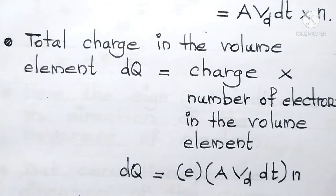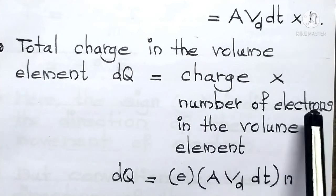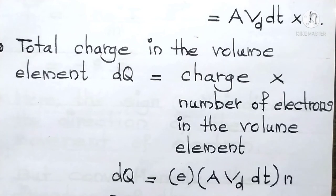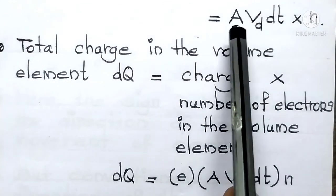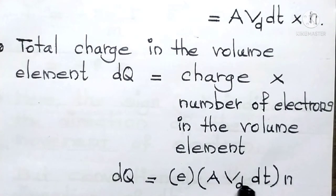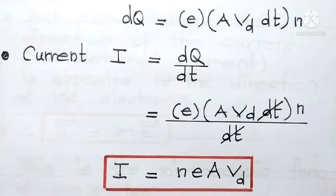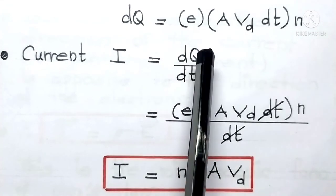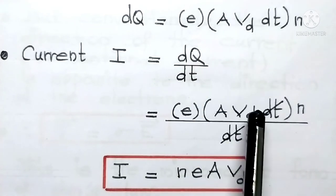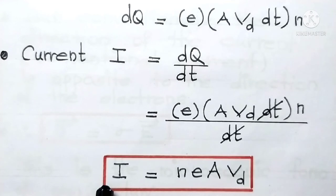The total charge in the volume element dq equals charge times the number of electrons in the volume element. So dq = e · A · Vd · dt · n. Current I = dq/dt, so I = (e · A · Vd · dt · n) / dt. The dt terms cancel, giving us I = n · e · A · Vd.